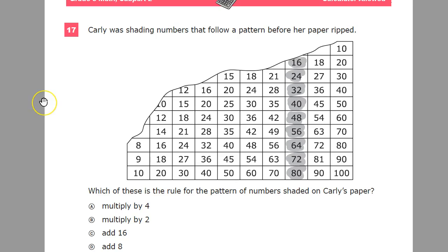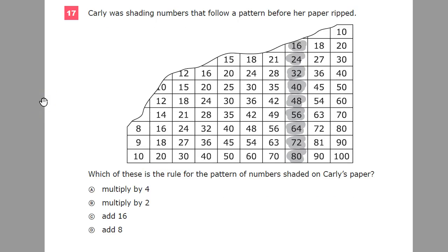So Carly was shading numbers that follow a pattern before her paper ripped. Which of these is the rule for the pattern of numbers she shaded on Carly's paper? Now, they say multiply by four, multiply by two, add 16, or add eight.